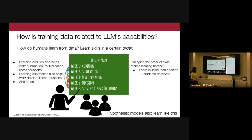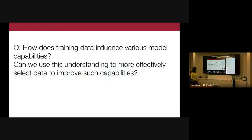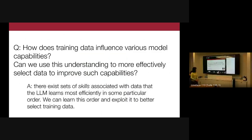Unfortunately, curriculum learning hasn't been widely adopted; the recommendation when using training data is still random shuffling or IID sampling, which remains a very strong baseline. To summarize the two key questions of this talk: first, how does training data influence various model capabilities, and second, can we use that understanding to better select training data? In our recent paper, we confirm the hypothesis that there exist groupings — which we call skills — associated with the data, with a natural order in which the model learns them most efficiently.